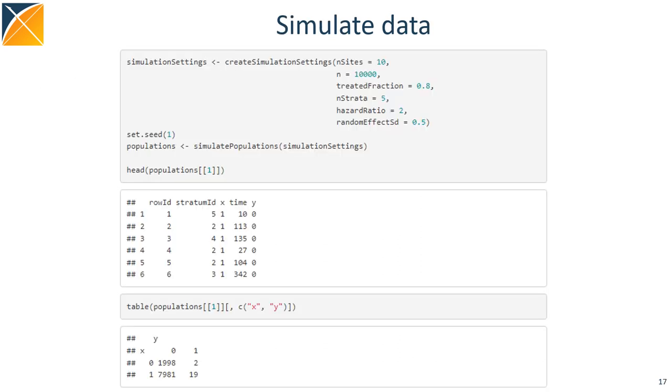So let's walk through the steps in R. For this example, we'll simulate some data using these functions in the package. We simulate 10 sites. As you can see, at each site we have the usual variables for a stratified Cox model. A unique row ID per person. Each person belongs to a propensity score stratum. We have x for the exposure and y for the outcome, both binary in this case, and time to either the outcome or to censoring.